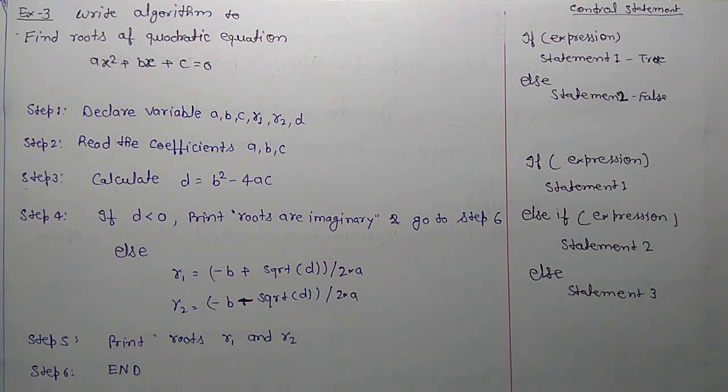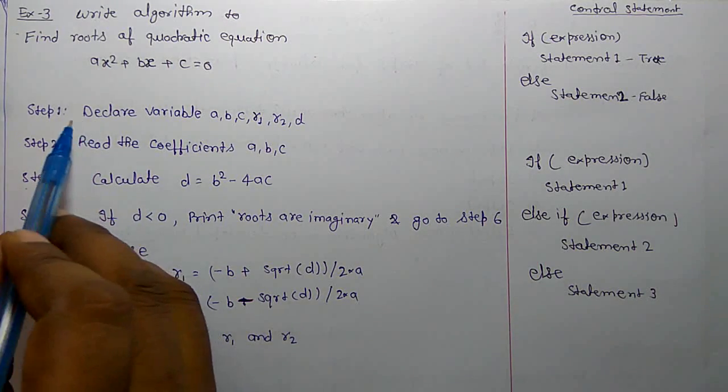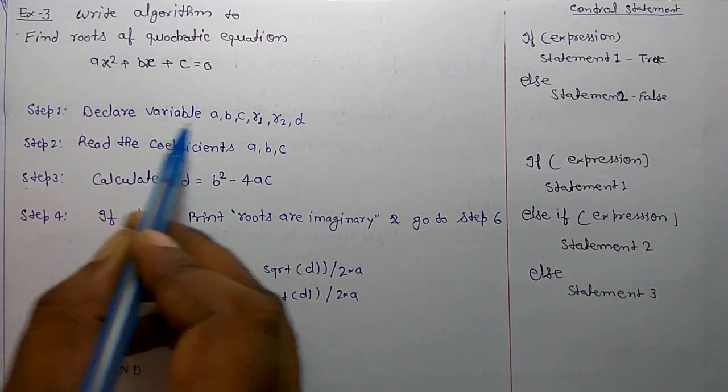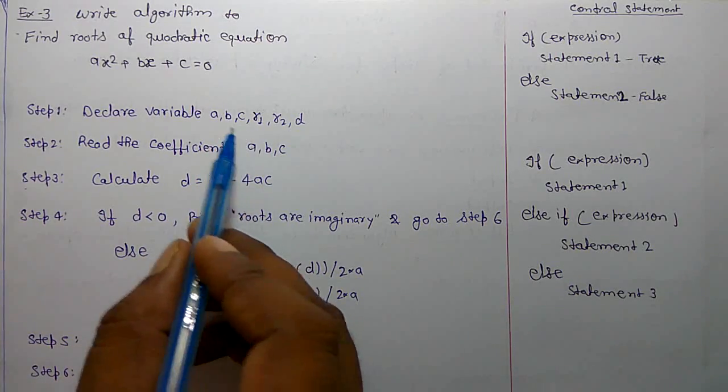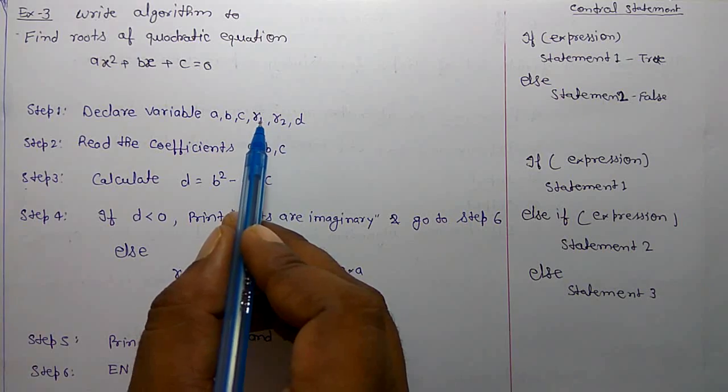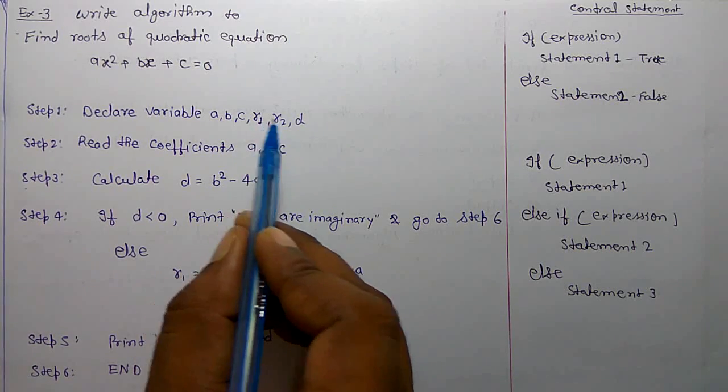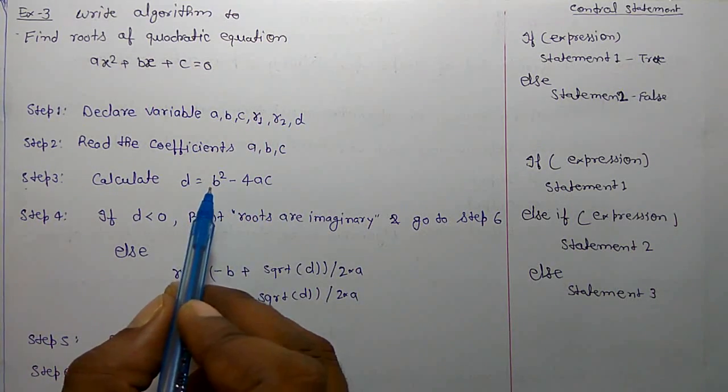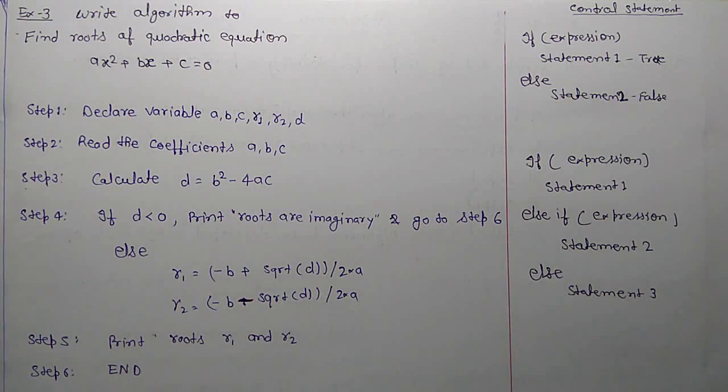So we have first step: declare the variables, variables that we are going to use. Variables A, B, C are coefficients, and for roots I have put r1, r2, and d. D equals b squared minus 4ac. So these variables are declared.